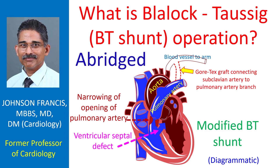The Blalock-Taussig shunt, known in short as BT shunt, creates a connection between a branch of the aorta and a branch of the pulmonary artery. Blood in the aorta at high pressure flows into the pulmonary artery at lower pressure. This increases blood flow to the lungs and improves the oxygen content of blood reaching the left atrium, the left upper chamber.